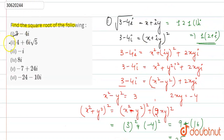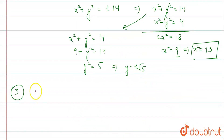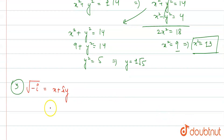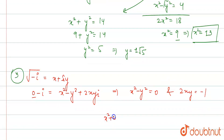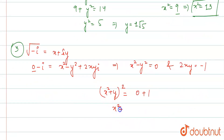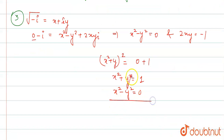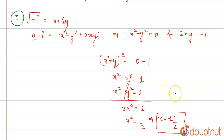Third part: square root of minus i. Setting x plus iy equal to that and squaring: minus i equals x squared minus y squared plus 2xyi. The real part is zero so x squared minus y squared equals 0, and the imaginary part gives 2xy equals minus 1. Then (x squared plus y squared) squared equals 0 plus 1 equals 1, so x squared plus y squared equals 1.